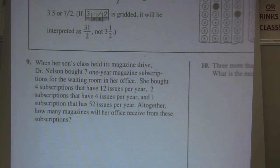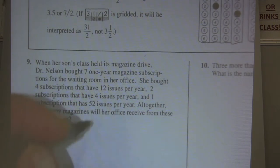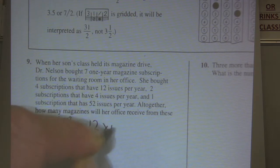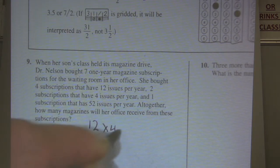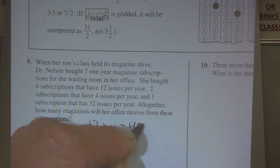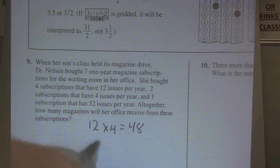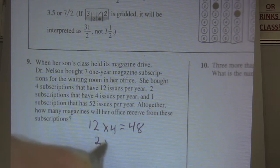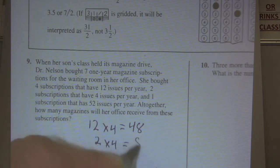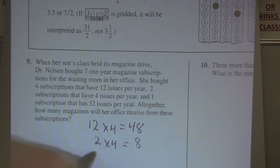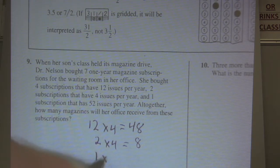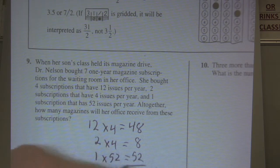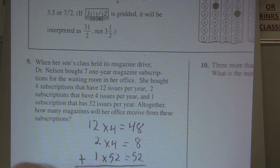Okay, this is just, we're starting with the easy level again, so this is an easy type problem. There's 12 issues, four times a year. That goes to 48. There's two subscriptions, and there's four of those per year. That's another eight. And then there's one subscription of 52 per year, so that's going to get me 52. So, we're just going to add these up, and that's going to get me 108.